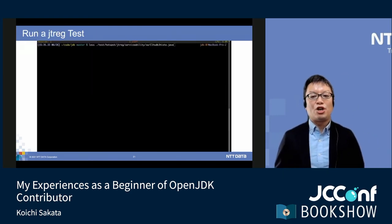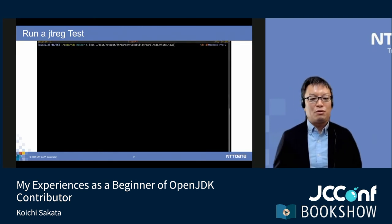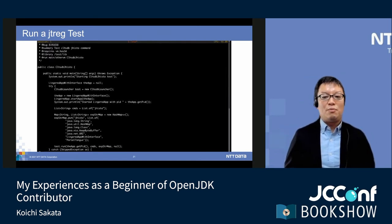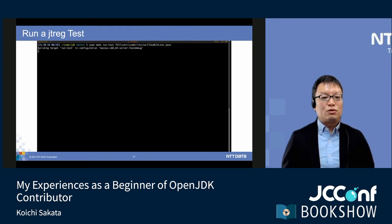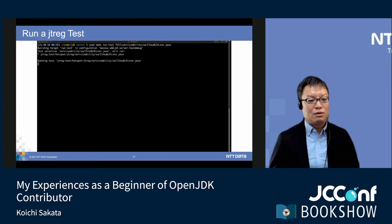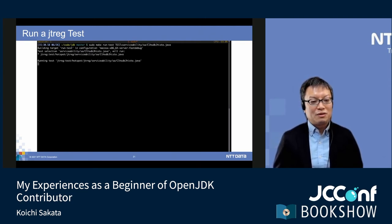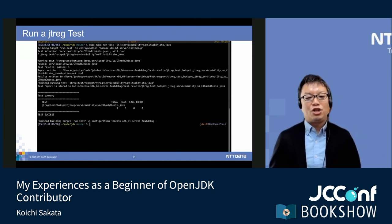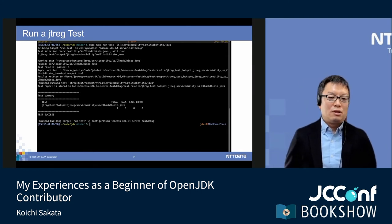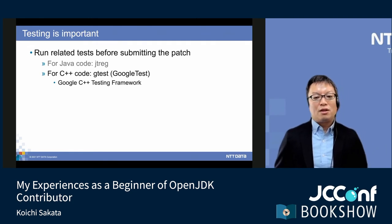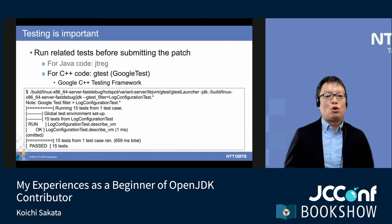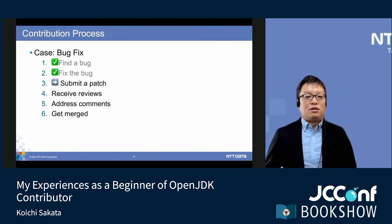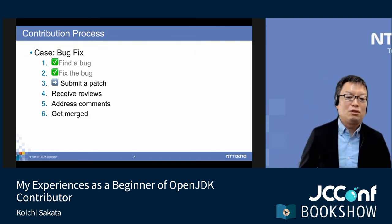This is a movie of running a JTREG test — I increased the playback speed. This code is a test class for the CLHSDB tool in JHSDB, and I executed the make run-test command. It's running the test. What you can see here is the result of running a JTREG test. JTREG test is for Java code. There is also GTest test code for the C++ part. GTest is a Google C++ testing framework. Here is the result of running a GTest test. So far, we've become able to run tests.